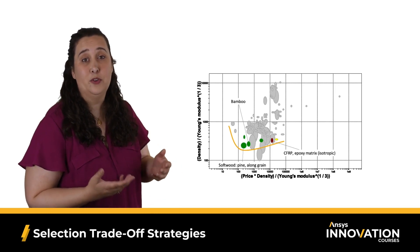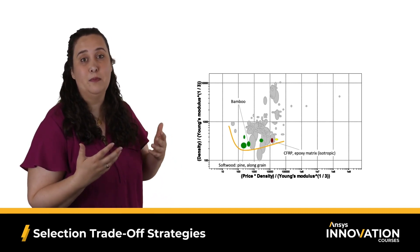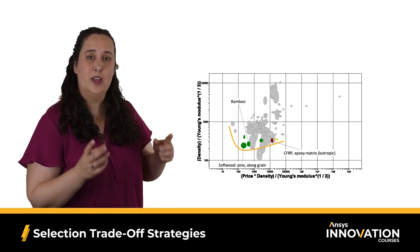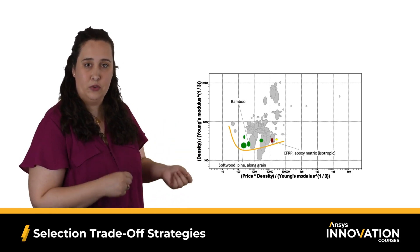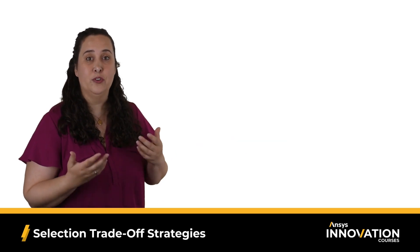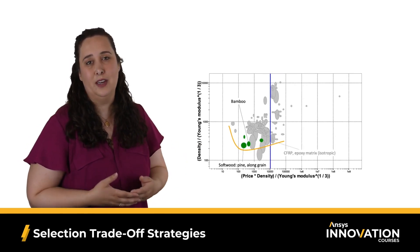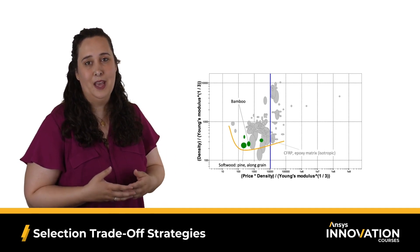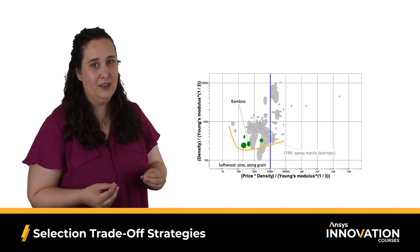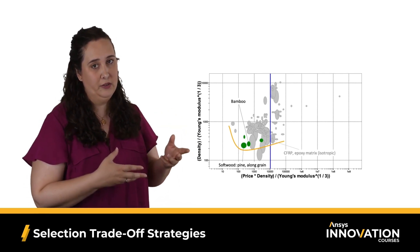Another way to address trade-offs is to take all your objectives and set all but one to actually be constraints. This is quite common when dealing with cost, as there's often an upper limit to your budget when designing something. However, this isn't truly optimizing, because you've moved things from objectives to constraints.